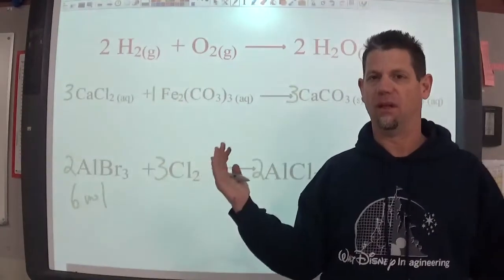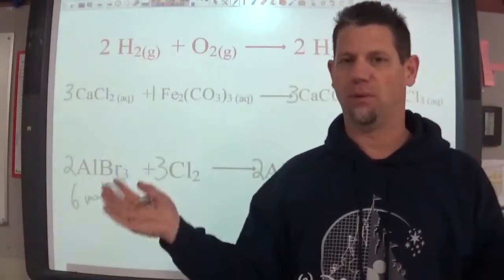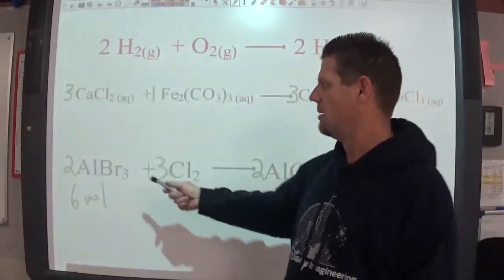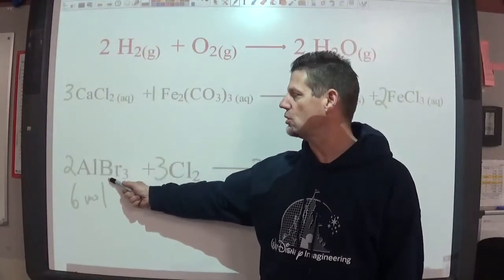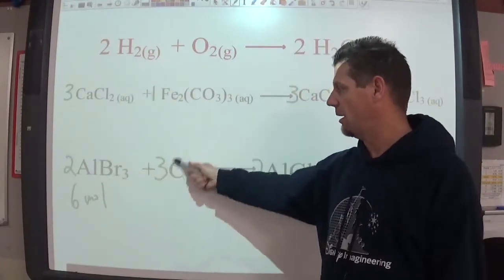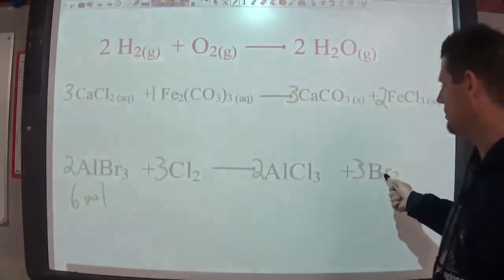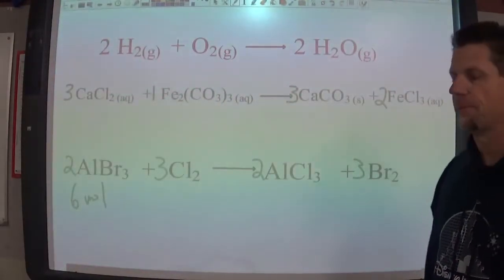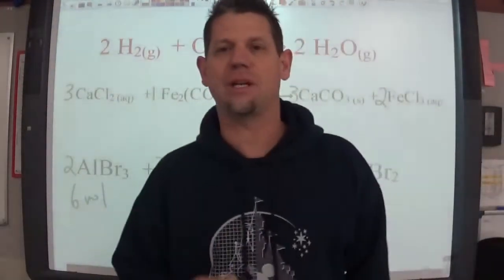Well this is never going to run out. We have this forever right? It's like we're in the bread factory with bread we would keep making sandwiches forever never never. But in this case I have six moles of aluminum bromide and an unlimited supply of this. How many moles of bromine gas can we make?